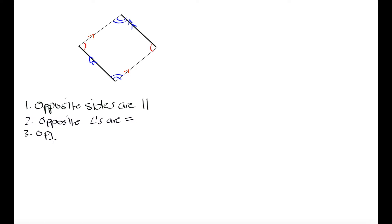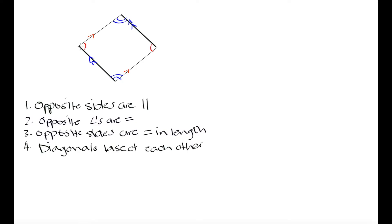We also had that opposite sides are equal in length. The last parallelogram property is that the diagonals bisect each other. With our two diagonals drawn in, the orange diagonal splits the green diagonal into two equal-length parts, and likewise the green diagonal splits the orange diagonal into two equal-length parts.